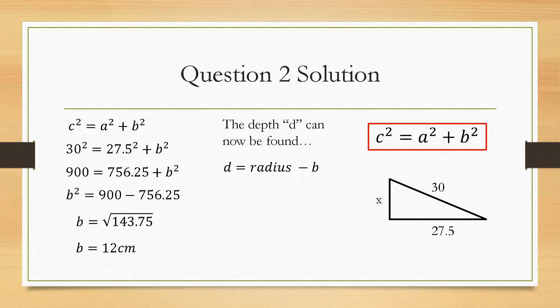So, d from the diagram earlier was the whole radius from the centre to the outside minus the length of b. So, it's going to be the radius, which was 30, take away 12, will give you a depth of water to be 18 centimetres. And that is how you would go about solving those kind of problems.